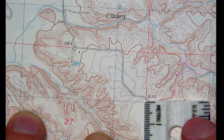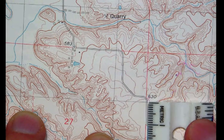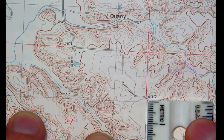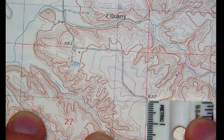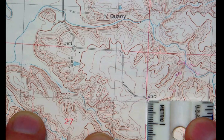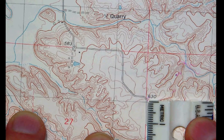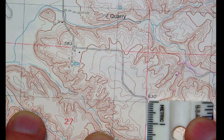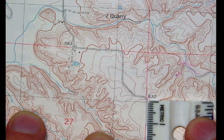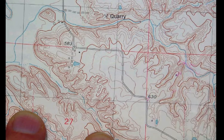Well if we simply take our metric ruler and measure that straightaway distance, we can see that distance is about 10 millimeters. Now since every millimeter on the map corresponds to a distance of 24 meters on the ground, that distance is going to be 10 times 24, or about 240 meters, a little more than two beads on a ranger bead counter.